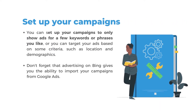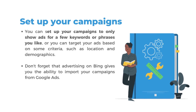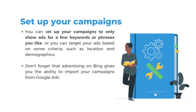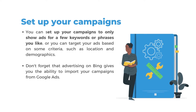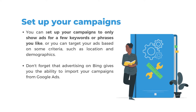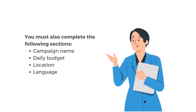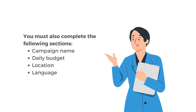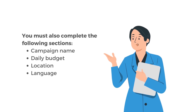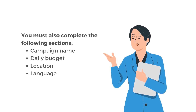Set up your campaigns. You can set up your campaigns to only show ads for a few keywords or phrases you like, or you can target your ads based on some criteria, such as location and demographics. Don't forget that advertising on Bing gives you the ability to import your campaigns from Google Ads. You must also complete the following sections: campaign name, daily budget, location and language.